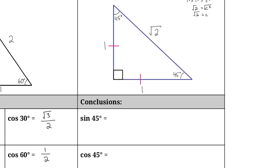Now let's set up our sine and cosine ratios. We only have this 45 degree angle, and it's an isosceles triangle, so whichever angle you choose to be your reference, you will get the same sine and cosine ratios. The sine of 45 is opposite over hypotenuse, and that's just going to be 1 over the square root of 2. The cosine of 45 degrees is adjacent over hypotenuse, and that's also just 1 over the square root of 2. I know we have a radical in the denominator — you can rationalize this, but let's focus on setting up our sine and cosine ratios and rationalize when doing practice problems.